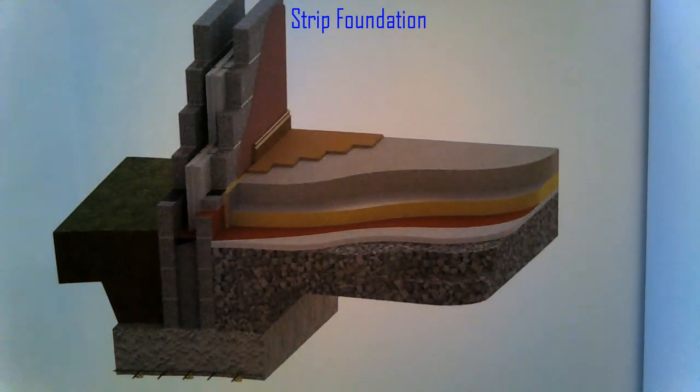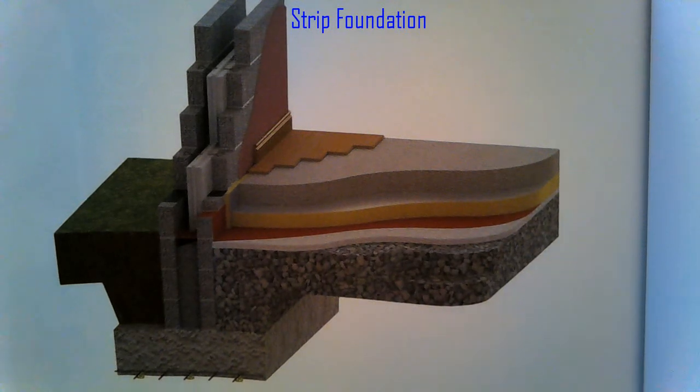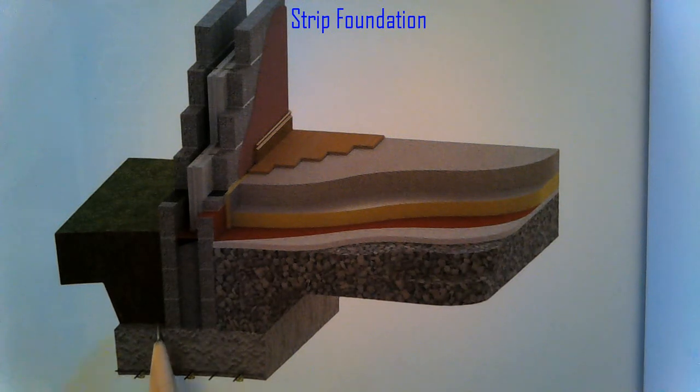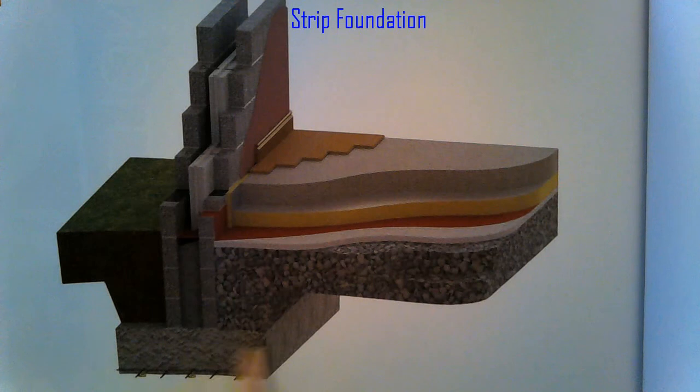Okay, so this drawing is a strip foundation. Looking at our 3D model here gives a realistic view of it. We have our strip foundation down here, so the overall width of it is three times the width of our wall. It's a 350mm wall, so the overall width of this is going to be 1050mm.